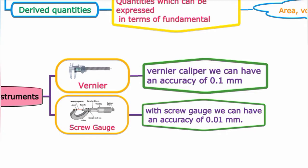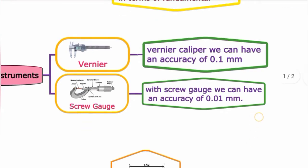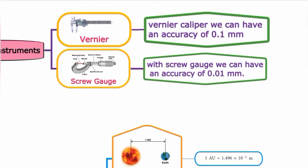Vernier Caliper has an accuracy of 0.1 mm, and Screw Gauge has an accuracy of 0.01 mm. Screw Gauge provides a more accurate measurement than Vernier Caliper.